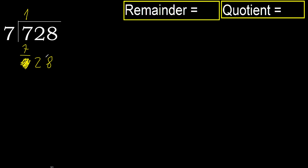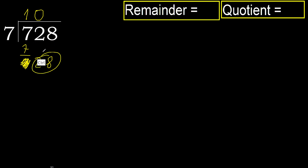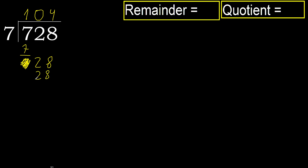Next, bring down — 2 numbers, therefore complete. Always complete with 0. Complete because here we have 2 numbers: 28. 7 multiplied by 5 is greater. Multiply by 4 is 28 — not greater. OK.